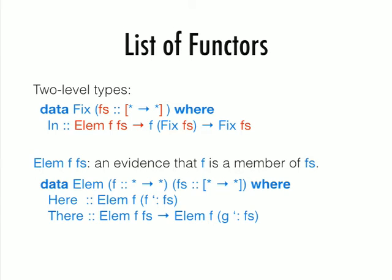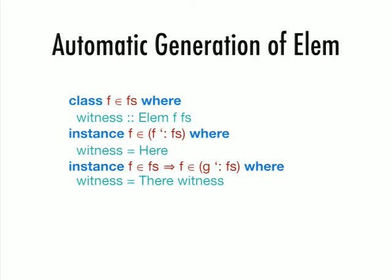Here this elem Fs is a witness that F occurs in Fs. If you are familiar with dependent type programming, this is the standard drill. Here says that F is a member of F cons Fs, and there says that if F is in Fs, then F is in G cons Fs as well. Every time you use In, you are supposed to supply a witness, but it will be inconvenient if you have to type that yourself all the time.